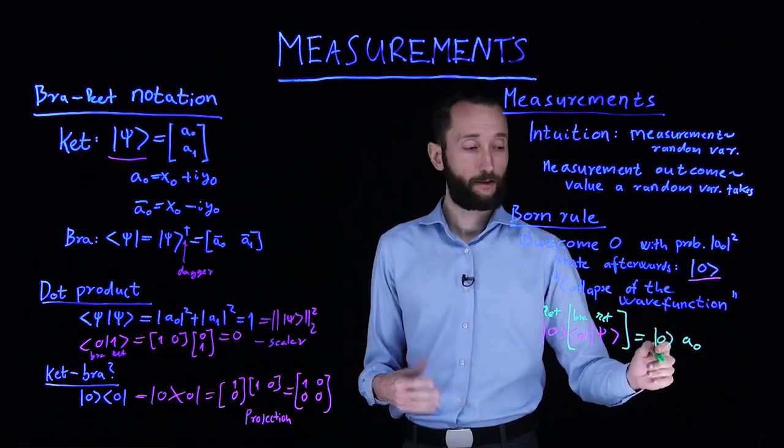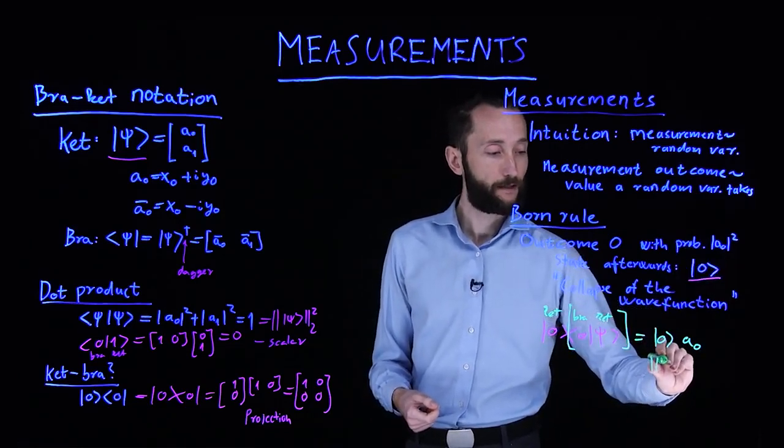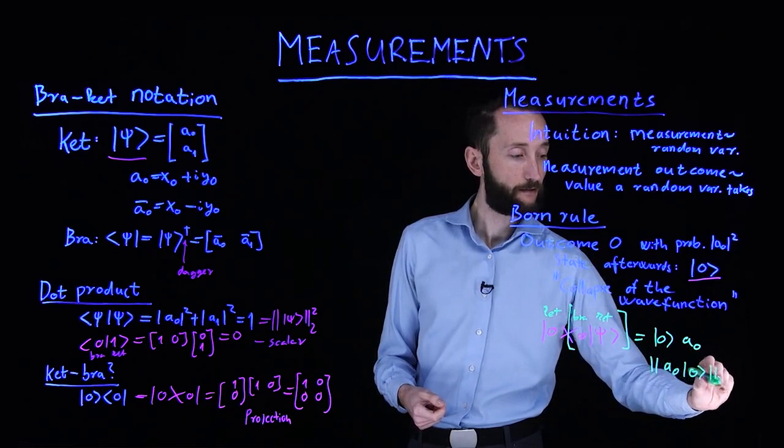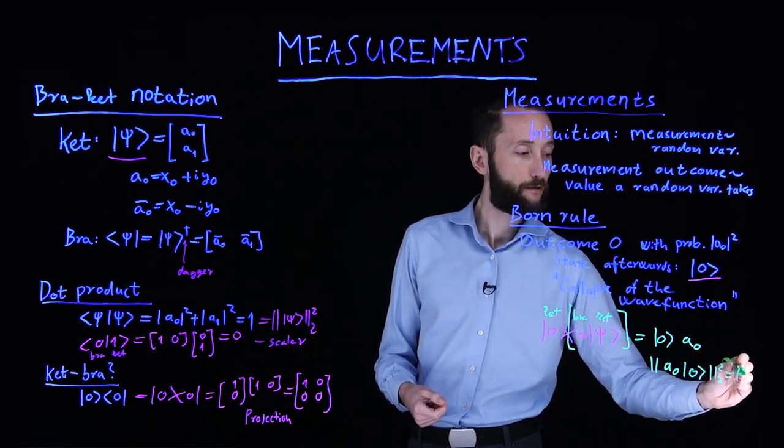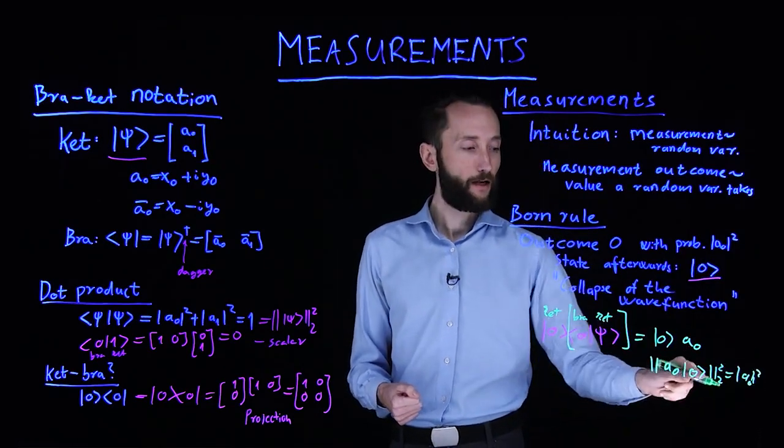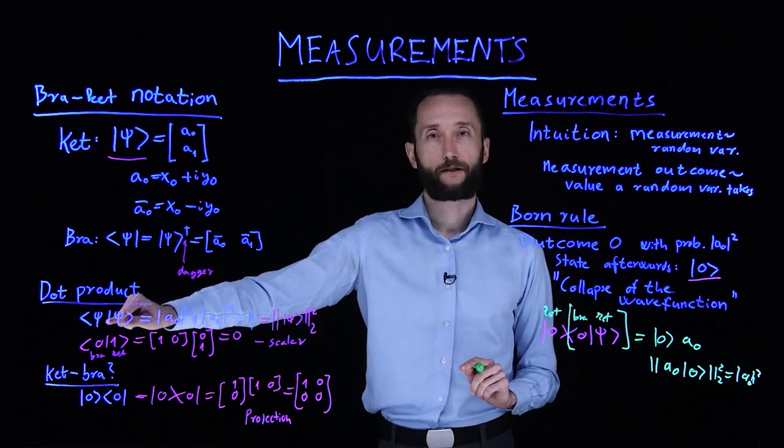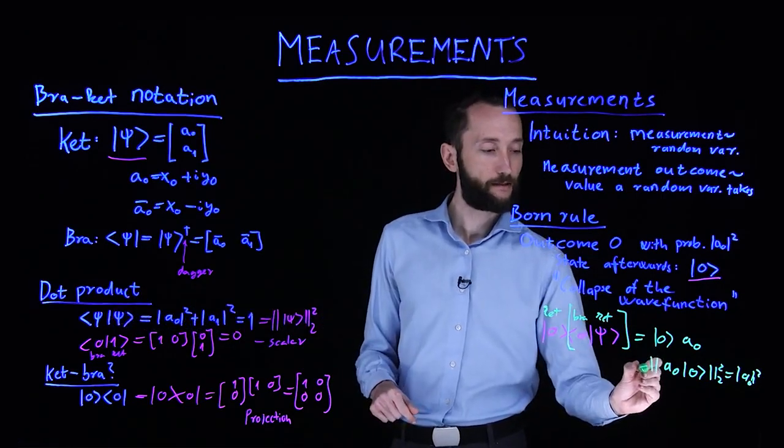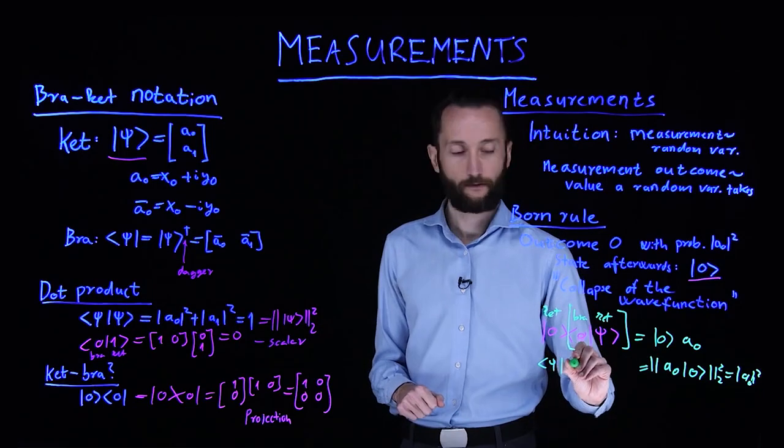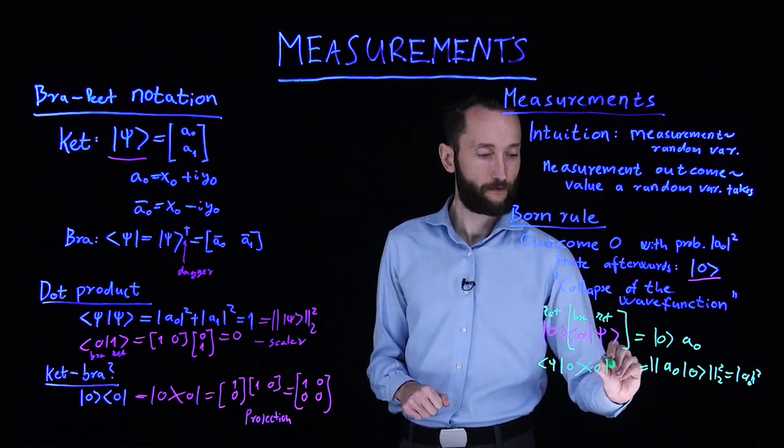This is going to be 0 ket times a_0. If we take the absolute value, we take the length of this vector, that's going to be exactly this vector. So if we take the length of a_0 times the 0 ket squared, that's going to give you exactly what the Born rule tells you. If you look at this expression and you look at this expression, you know that you can write the square of the 2-norm in this form. So we can actually write this as an expectation value of this outcome.